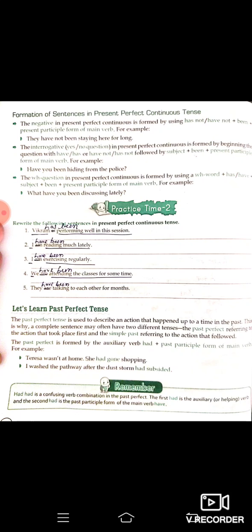The WH question in present perfect continuous is formed by using a WH word plus 'have'/'has' plus subject plus 'been' plus present participle form of the main verb. Example: 'What have you been discussing lately?' — kaun si cheez ke upar tum discuss kar rahe ho, kab se?